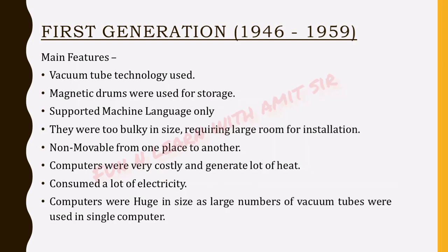The main features of first generation computers: they used vacuum tube technology; magnetic drums were used for storage; they supported only machine language; they were too bulky in size and required large rooms for installation; they were non-movable from one place to another; they were very costly and generated a lot of heat; they consumed a lot of electricity; and they were very huge in size as large numbers of vacuum tubes were used in a single computer.